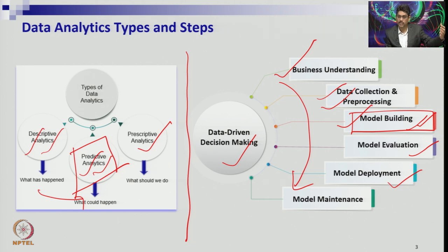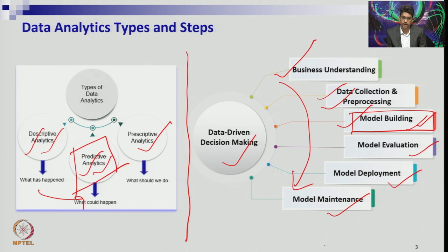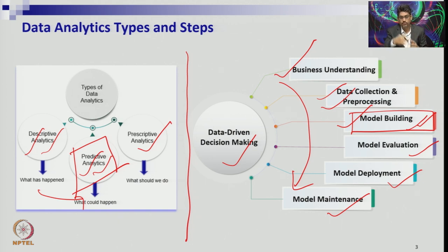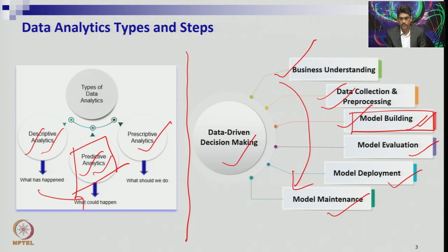Unlike general projects where you move on after commissioning, in data analytics you must also monitor the process over time — model maintenance is crucial because data are generated every day. A model developed on 3-4 years of data may become obsolete after 2 years as new data reveal new trends and patterns. You may need to redesign your structure, upgrade your model with new technology, AI processes, and machine learning techniques based on more available data.